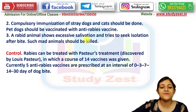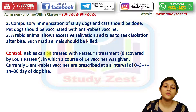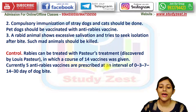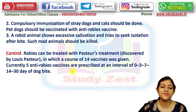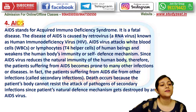A rabid animal shows excessive salivation and tries to seek isolation; such mad animals should be killed for safety. Rabies can be treated with Pasteur's treatment, in which a course of 14 vaccines was given. Currently, 5 anti-rabies vaccines are prescribed at intervals of day 0, then day 3, day 7, day 14, and day 30 after the dog bite.